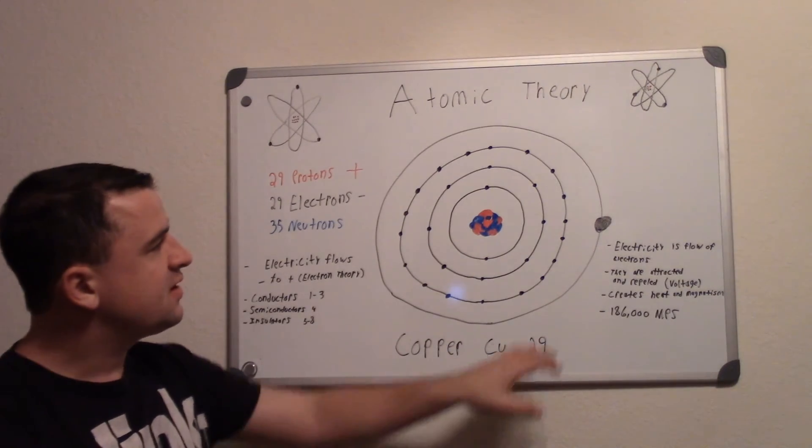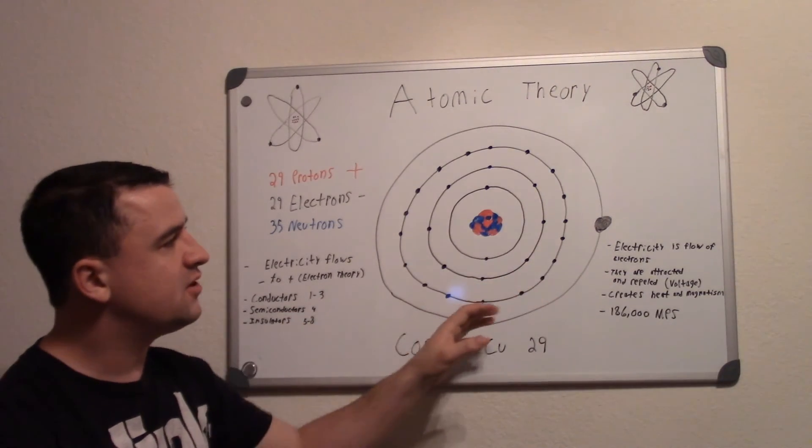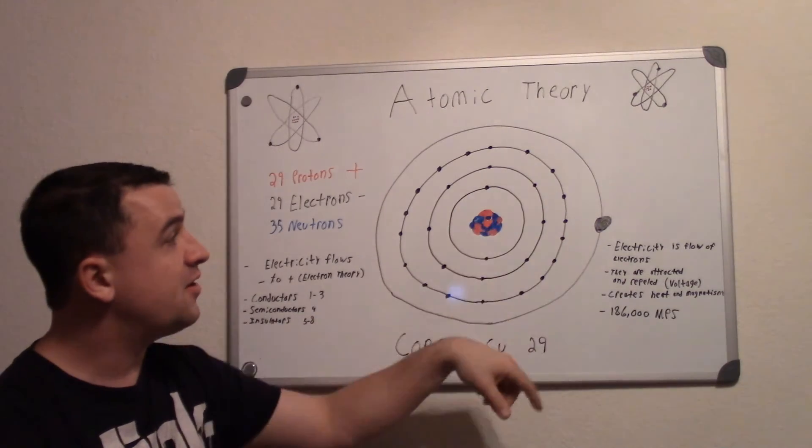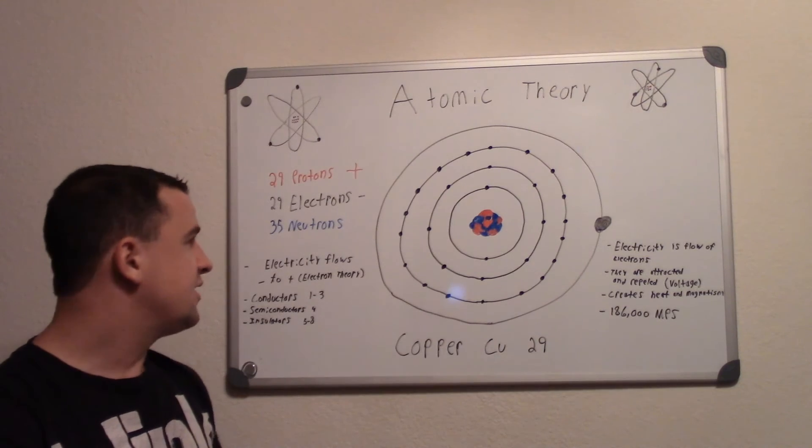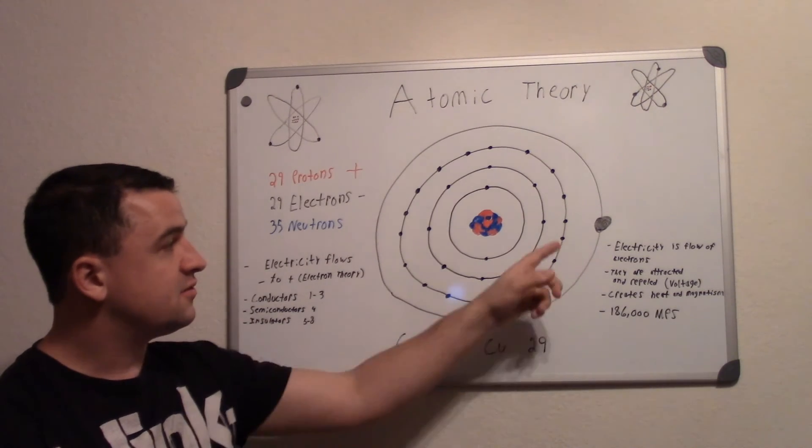That's because, like I stated, the reason why the free electron can flow is because there's less of them out here and they're farther away. So the less there are, the more easily they can flow. So that's why copper is a good conductor because there's only one.